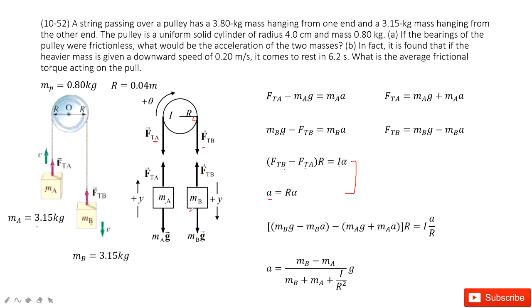So there, we consider Newton's second law. For object A, we consider the net force, FtA minus mAg, equal to mass times acceleration. So we get FtA there. And for object B, we have the mBg minus the tension FtB equal to mass times acceleration. So FtB is there.